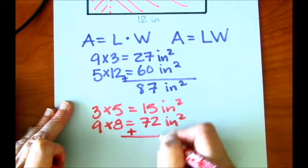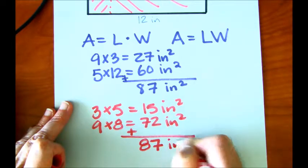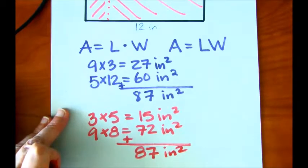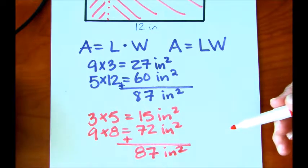Again, we're going to add those up. We get 87 inches squared. So these two problems are very similar to the previous video that I showed you. In this case, however, I'm using inches and maybe some different numbers. But let me show you one other way that you could solve for the area of this combined figure.